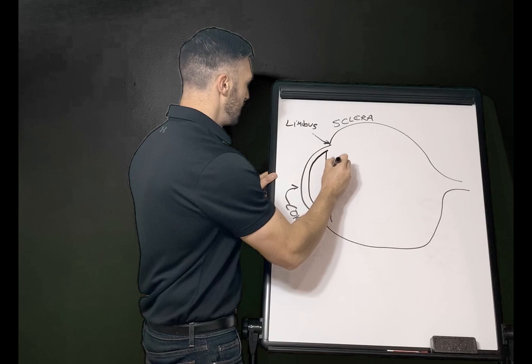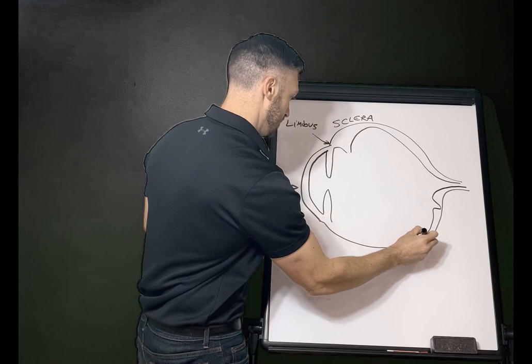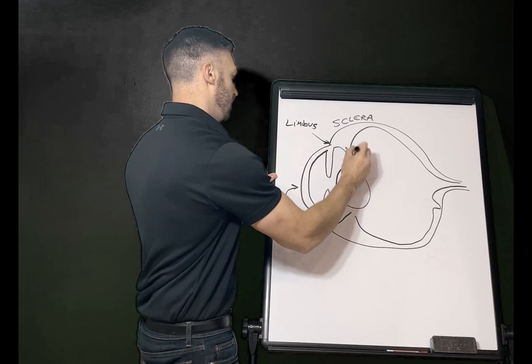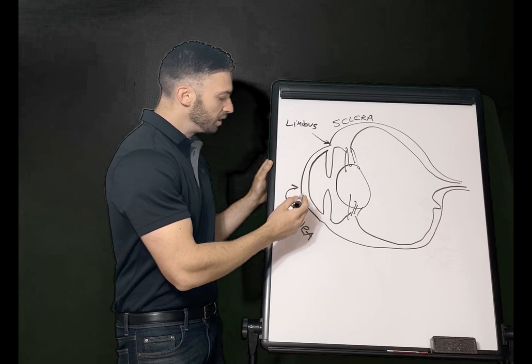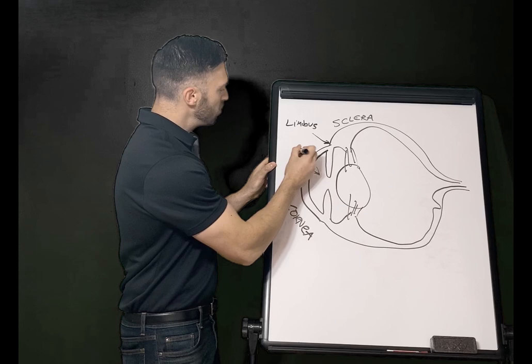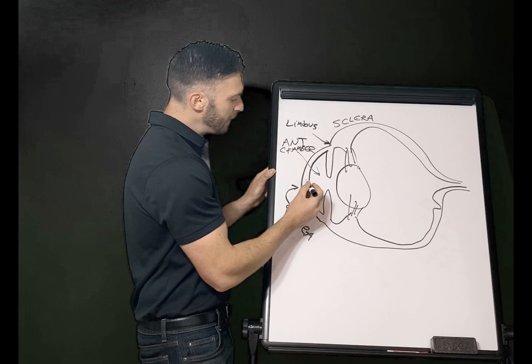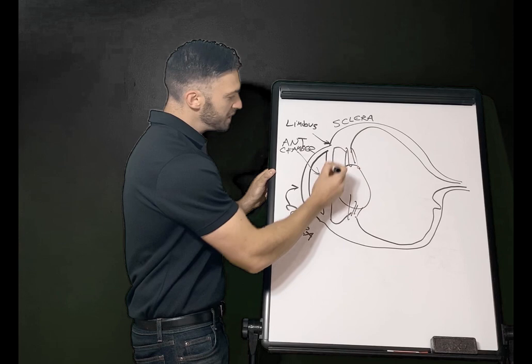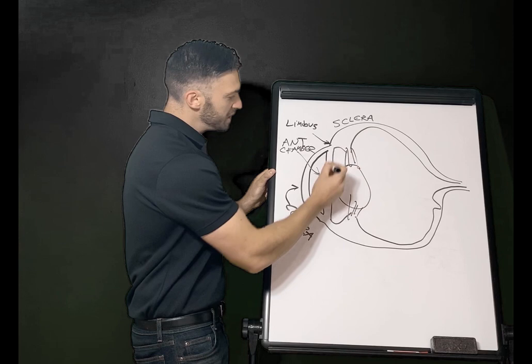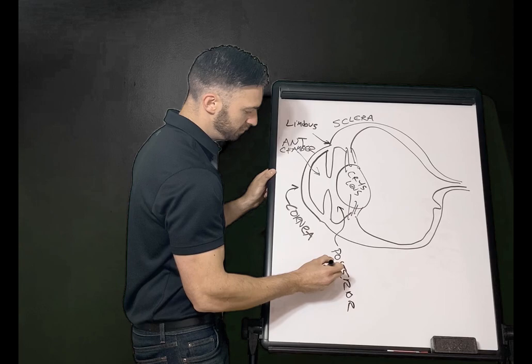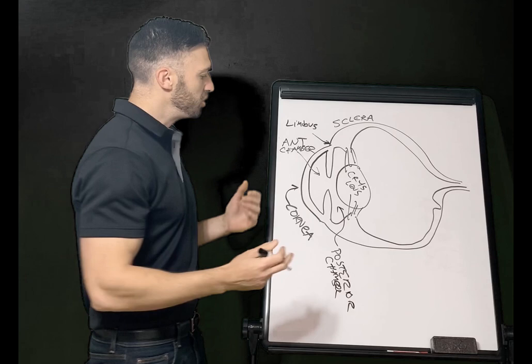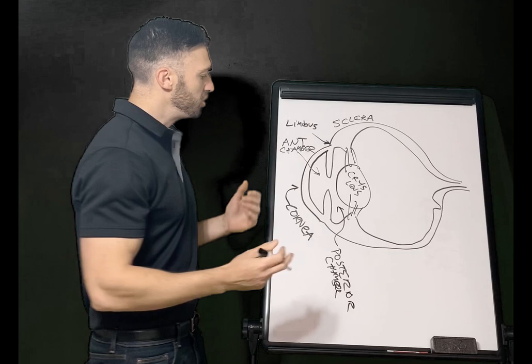So let's work our way inward. We know the cornea is the external most part of the eye; of course it has the tear film in front of it. This first chamber is referred to as the anterior chamber, and it's filled with aqueous humor. Between the cornea and the iris is the anterior chamber, but between the iris and the crystalline lens we have the posterior chamber, which is also filled with aqueous humor.